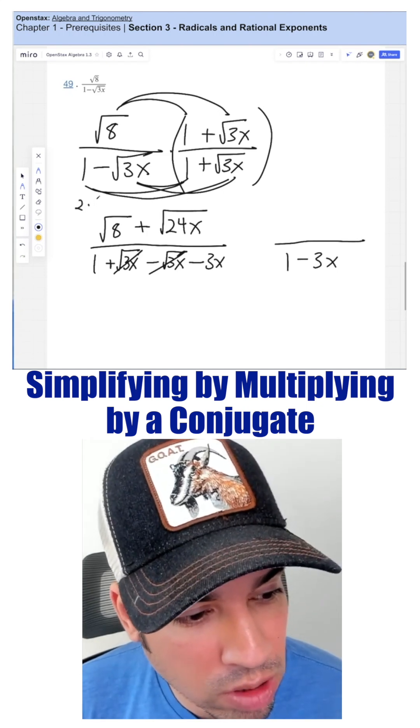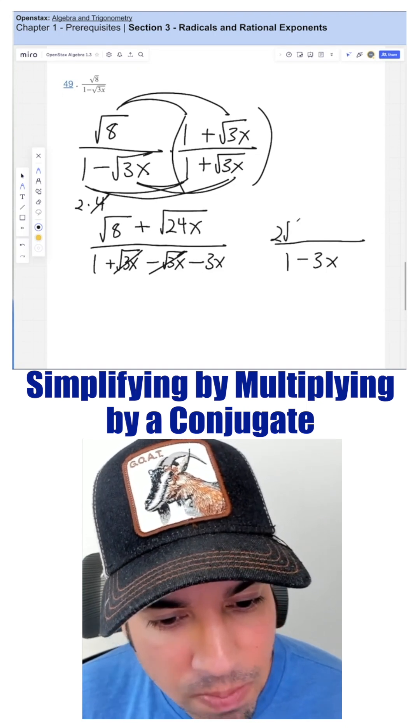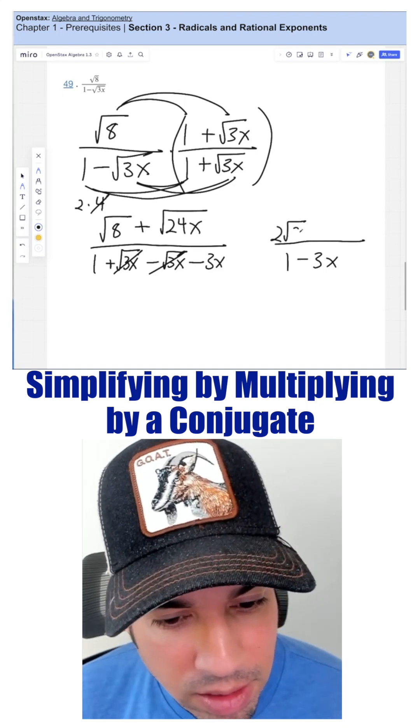We know that 8 is 2 times 4. 4 is a perfect square, and that's just a 2 that comes out, and this 2 remains inside the radical.